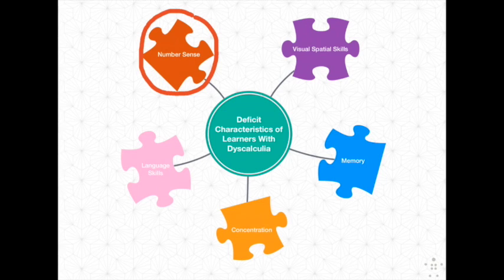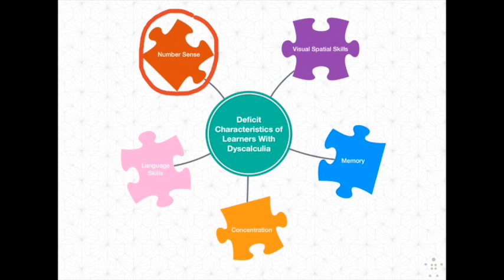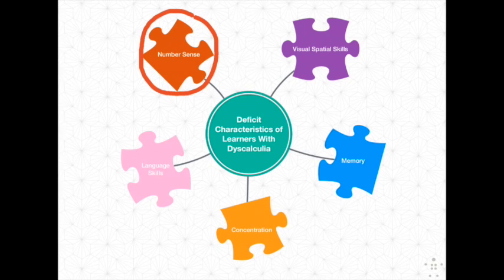Let's start by having a look at number sense first. Students with dyscalculia may be unable to subitise even with small numbers, estimate whether a numerical answer is reasonable, count backwards reliably, and have trouble with sequencing. A specific example of their inability to subitise would be if they were unable to recognise three peas on a plate and had to count individually to know how many were there.